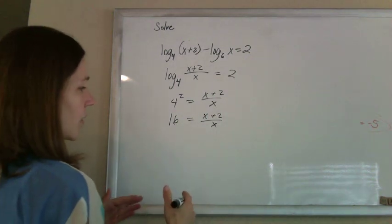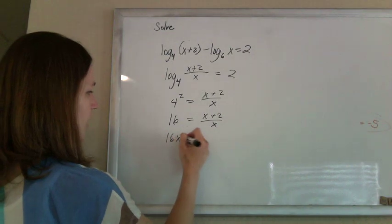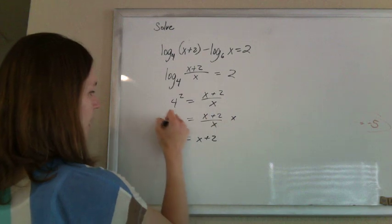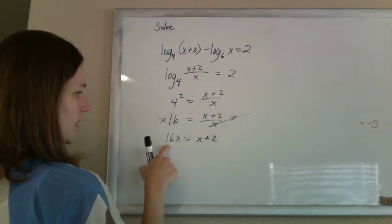Solve this equation now however you can. Get rid of the fraction by multiplying both sides by x. So 16x will equal x plus 2. When you multiply by x, it cancels out from this side, and you'll get 16x on that side.